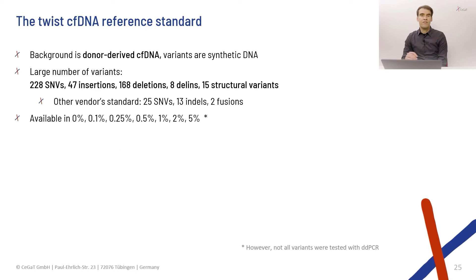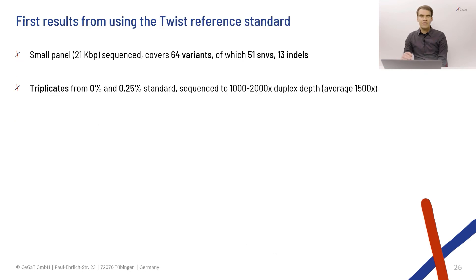Then TWIST came out with a new reference standard. It's based on donor-derived cfDNA, so it resembles a real-world sample. It has a very large number of variants and is available at different allele frequencies. Some of the variants in the standard are also validated by ddPCR. Using this standard, we decided to revisit our validation. We have a small panel of 21 kilobases that covers 64 variants, mostly SNPs. We sequenced triplicates from the 0% and 0.25% standards using duplex molecular barcoding, arriving at a final coverage of about 1500x on target.